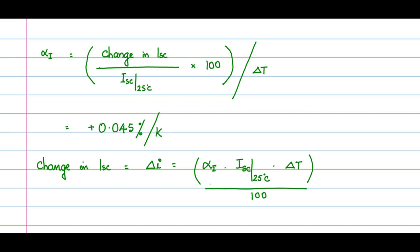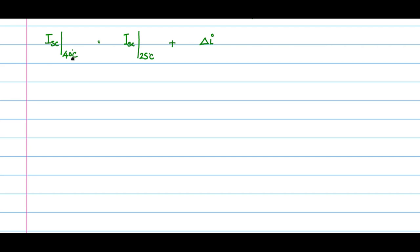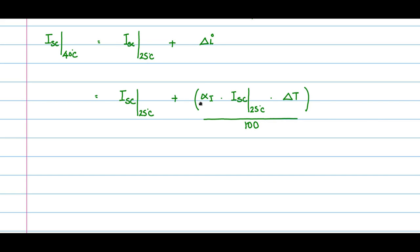Substituting into the Isc equation, Isc at 40 degree C equals Isc at 25 degree C plus delta I, where delta I is replaced by alpha_i times Isc at 25 degree C times delta T divided by 100.